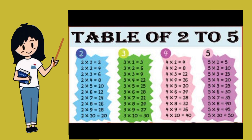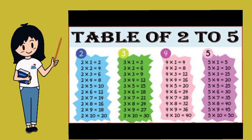Two sixes are twelve. Two sevens are fourteen. Two eights are sixteen. Two nines are eighteen. Two tens are twenty.